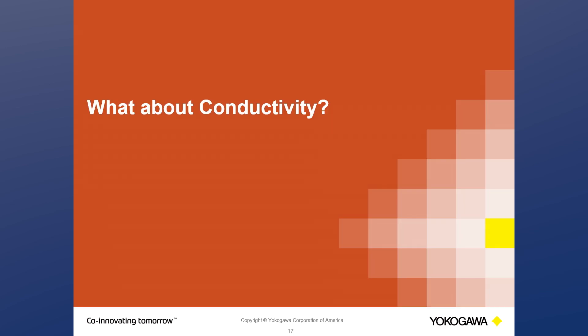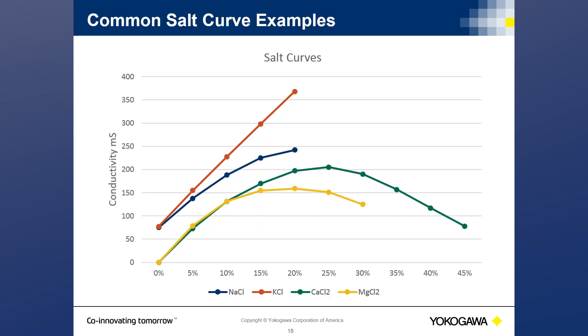All three measurements discussed so far rely on grab sampling and personal interpretation of readings. Conductivity measurements can be used as a reliable indicator for real-time brine or any percent concentration reading. Utilizing an online process analyzer removes the need for timely grab sample analysis. Conductivity measurement is nonspecific — if you have a combination mixture, you cannot differentiate one chemical from another in a mixed solution. However, it's normally not a problem with percent concentration applications when we know the source — for example, starting at 95% sulfuric acid and diluting to 25% with water.